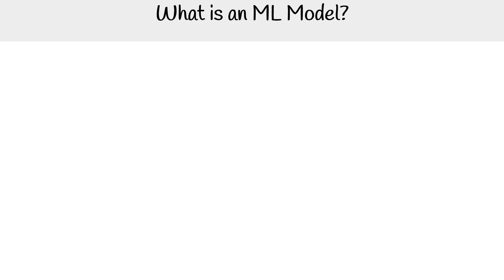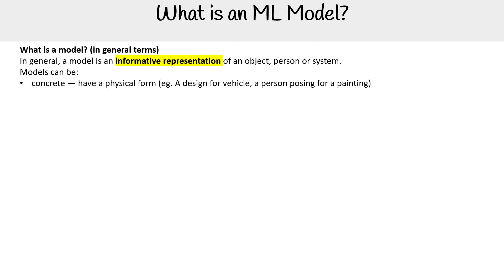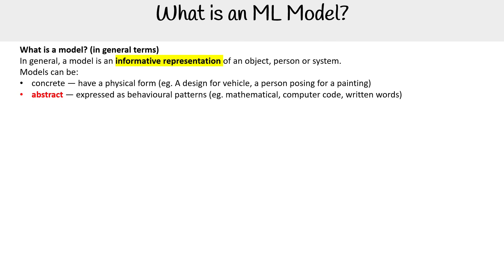Let's take a look at what a machine learning model is. But before we do that, let's define what a model is in general terms. A model is an information representation of an object, person, or system. Models can be concrete, so they have a physical form — think a design of a vehicle, or a person posing for a picture. Then you have abstracts, expressed as behavioral patterns — think mathematical, computer code, written words.